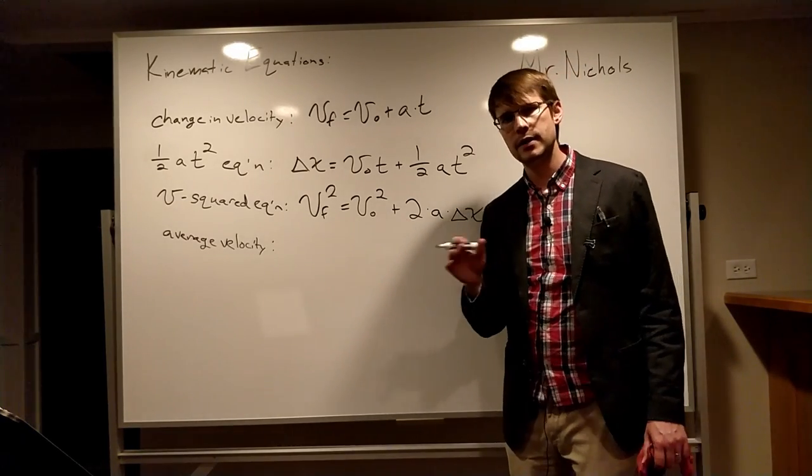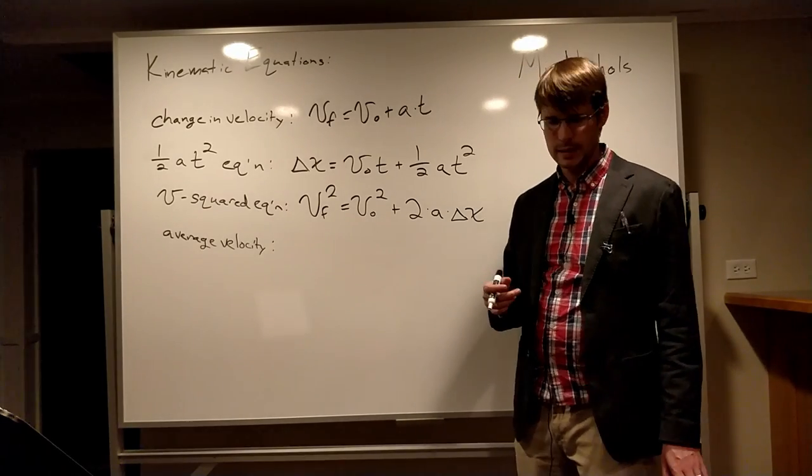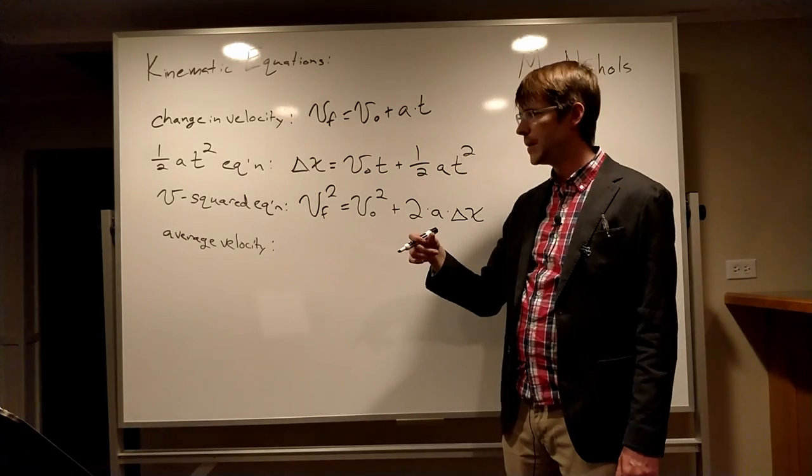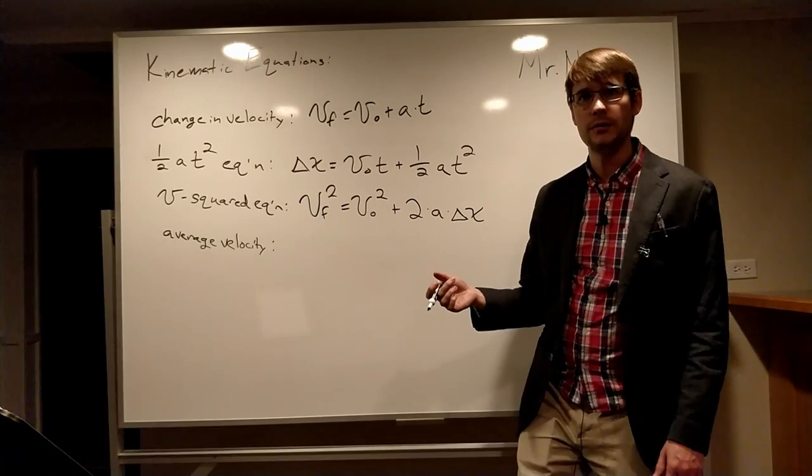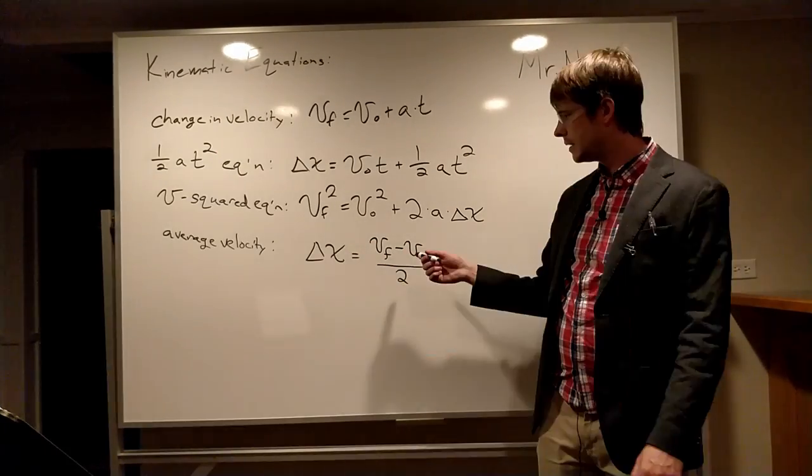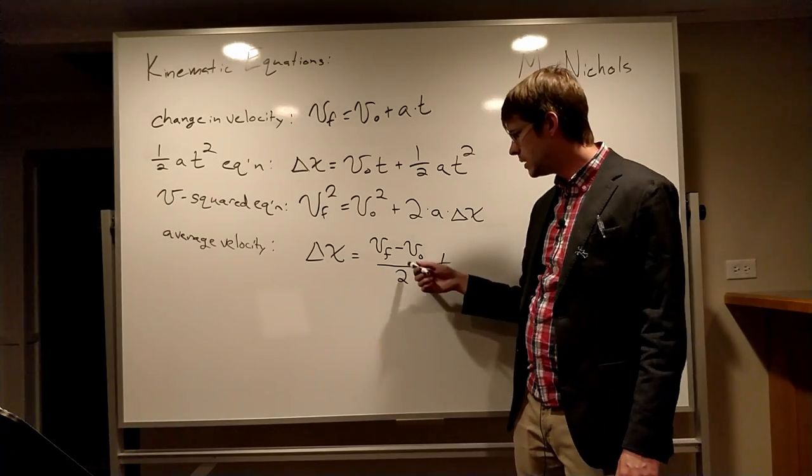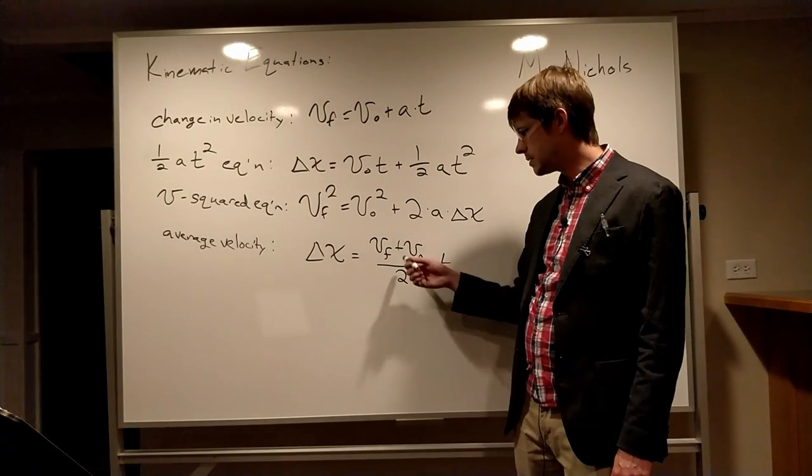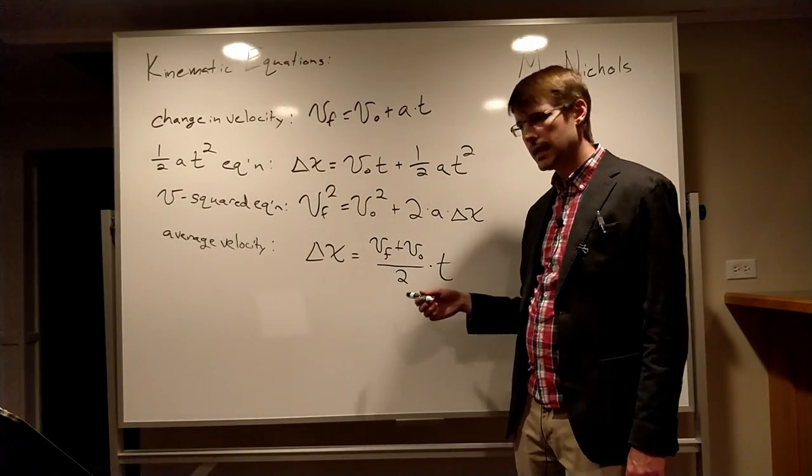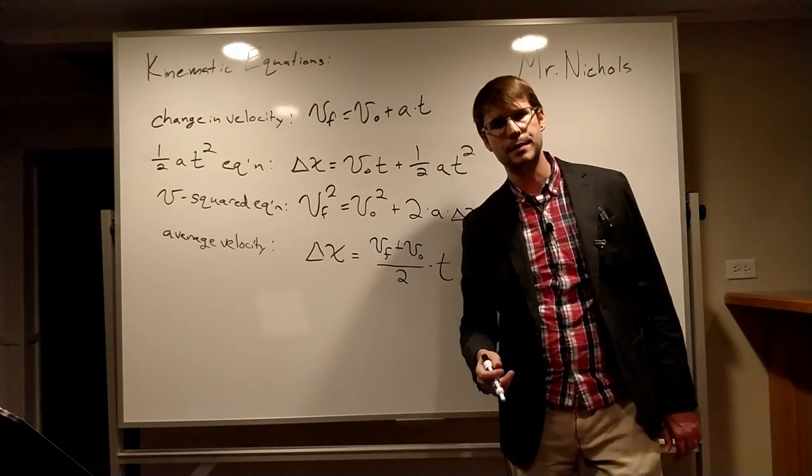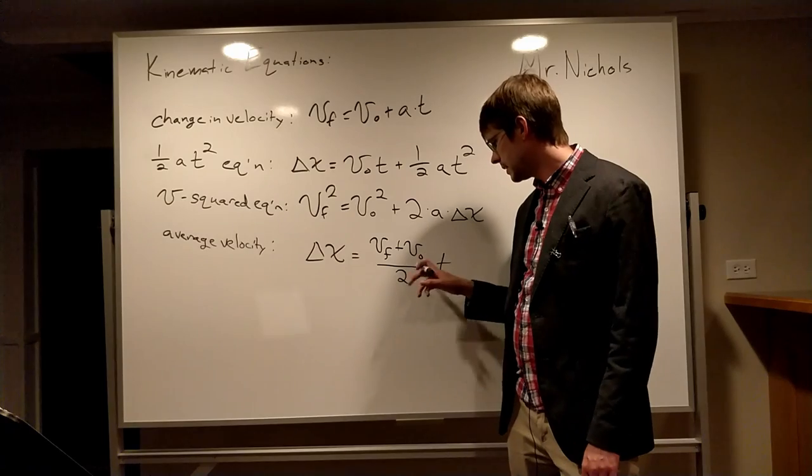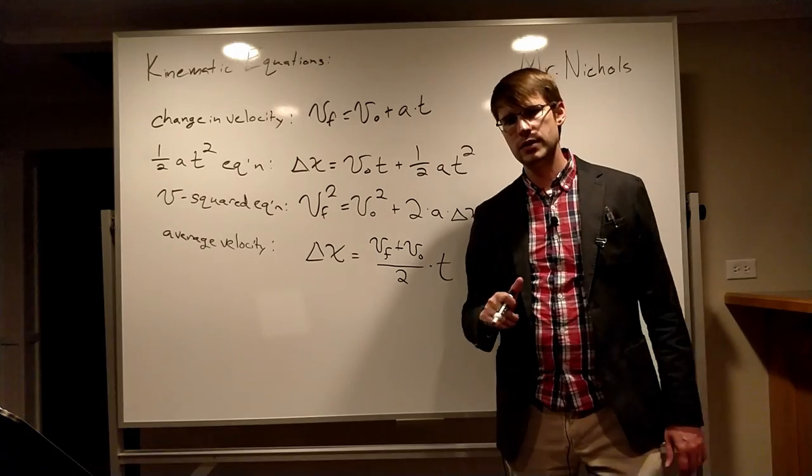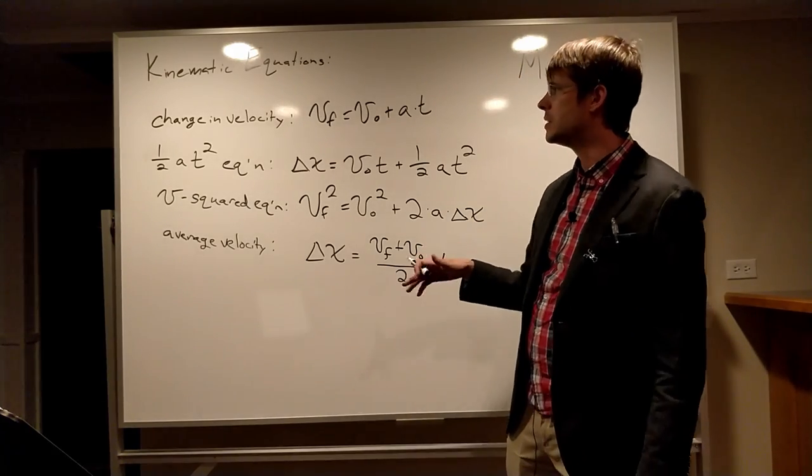And the last one, this is one that does not show up on the AP equation sheet at all, but it's one that you can definitely use. And I would encourage you to use it because this is probably the easiest equation other than this first one, because it's just the average velocity. It's almost the definition of what average velocity is. And here it is. It's delta x, the displacement is equal to vf plus vo. So this is the average velocity because you just add the beginning and the final velocity and divide by two, and then multiply by the time. This tells you the distance that some object will go. This one's not on your equation sheet, but it's super easy to remember. So feel free to use this at any point as you go through.